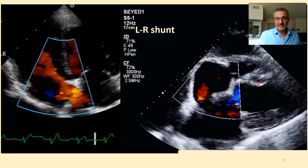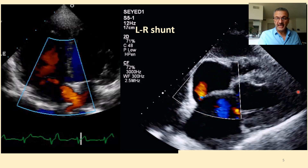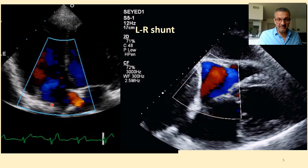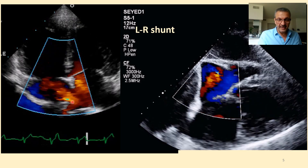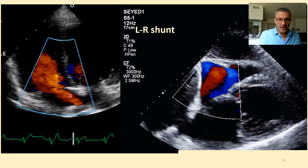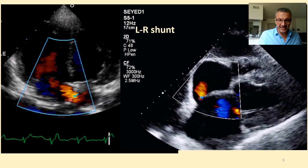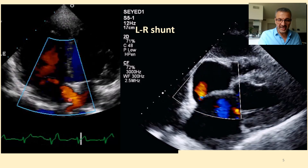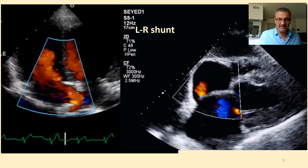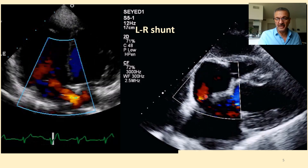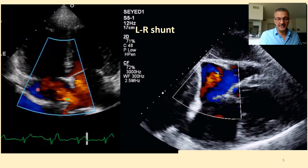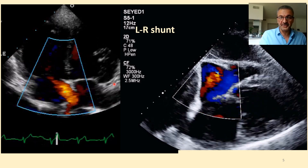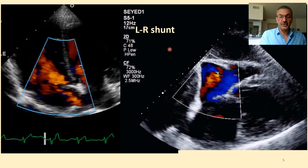In the bubble test, as you see here, when we inject bubble, the bubble cannot fill that area because there is a jet pushing the bubble away from this region. So you can see a filling defect in the bubble at that area at that moment. We have a bubble filling defect on the right atrium in the left-to-right shunt.